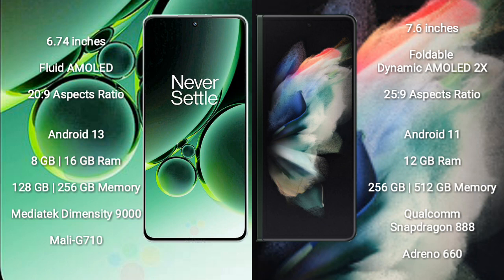OnePlus Nord 3 comes with 8GB or 16GB RAM and 128GB or 256GB internal storage, MediaTek Dimensity 9000 processor and GPU Mali-G710. Samsung Galaxy Z Fold 3 comes with 12GB RAM and 256GB or 512GB internal storage, Qualcomm Snapdragon 888 processor and GPU Adreno 660.